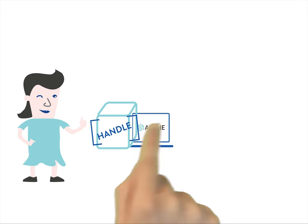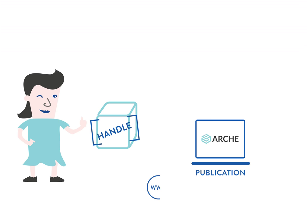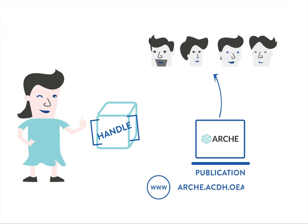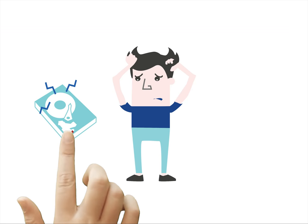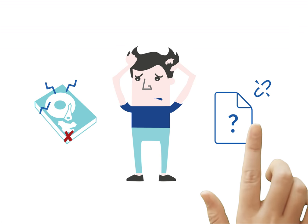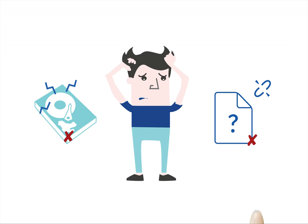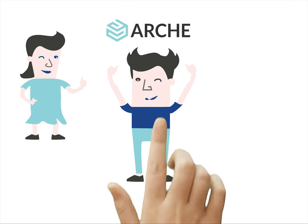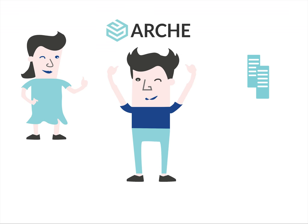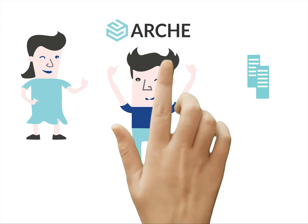Nora sends the handle to Dante, who can now view his data in ARCHE and show all his colleagues what he did in his previous project. From now on, Dante doesn't have to worry if the hard disk with the data on it is still working or if the files can still be opened, because ARCHE is taking care of all this by performing regular backups, integrity checks and format migrations.